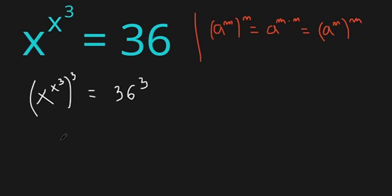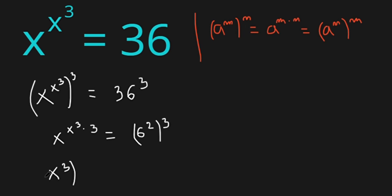So using this formula, we have x to the power of x to the power of 3, and then times 3, is equals to 36, which can be written as 6 squared, all this to the power of 3. Using that formula, we can write it as x to the power of 3, all this to the power of x to the power of 3, is equals to 6 to the power of 2 times 3, which is equals to 6 to the power of 6.